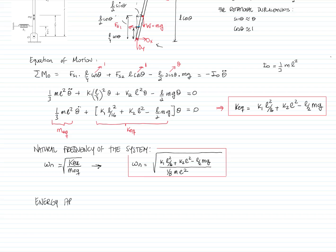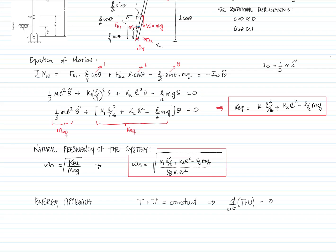We can also solve this problem with an energy approach. We know that when we have a system without damping, we have conservation of energy. So kinetic energy plus potential energy is constant through all time. Therefore, if we differentiate this expression with respect to time, we get zero. The kinetic energy, since we are rotating about point O, is (1/2) times the mass moment of inertia about O times the angular velocity squared.